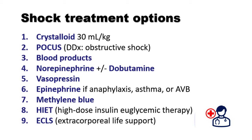High-dose insulin euglycemic therapy (HIIT) is a treatment strategy that involves administering high doses of insulin to improve myocardial contractility, especially in cases of overdose from beta-blockers or calcium channel blockers.